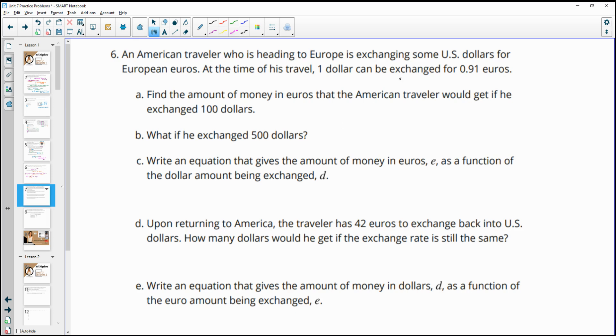Number 6, an American traveler who's headed to Europe is exchanging some U.S. dollars for European euros. At the time of travel, $1 can be exchanged for 0.91 euros. Find the amount of money in euros that an American traveler would get if he exchanged $100. So if you have $100, we would just multiply that times 0.91 and that would equal 91 euros. And if he exchanged 500, then we would just take 500 times the 0.91 and we would end up with 455 euros. Then it says write an equation that gives the amount of money in euros as a function of the dollar amount being exchanged. So your euros equals 0.91 times the number of dollars that you're exchanging.